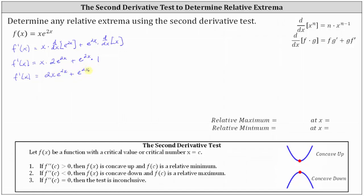There are no values of x where the first derivative is undefined, so to find any critical numbers we set the first derivative equal to zero and solve. We factor out the greatest common factor of e to the power of 2x, giving us e to the 2x times the quantity 2x plus 1 equals zero. Since e to the power of 2x is never equal to zero, the first derivative is only zero when 2x plus 1 equals zero, giving us the single critical number x equals negative one half.